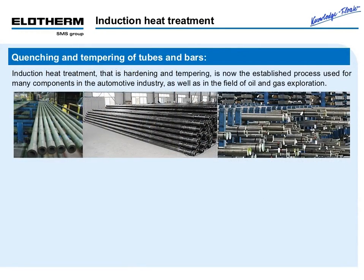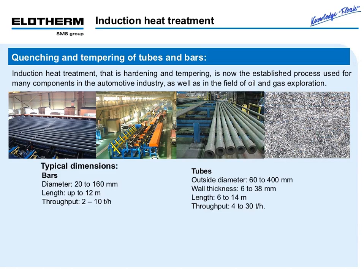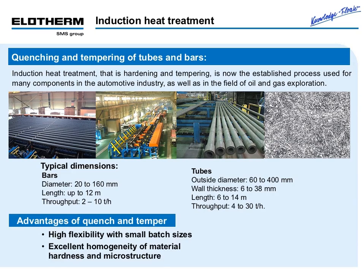Example 4: Quenching and tempering of tubes and bars. Induction heat treatment — quench and temper — is now the established process used for many components in the automotive industry as well as in the field of oil and gas exploration. Typical dimensions for bars are up to 160 mm in diameter and 12 meters in length, with a throughput of 10 tons per hour. Wall thickness of tubes can be up to 38 mm, with outside diameters up to 400 mm and lengths up to 14 meters, reaching throughput of up to 30 tons per hour. Advantages include high flexibility with small batch sizes, excellent homogeneity of material hardness and microstructure, and heat treatment without surface decarburization.